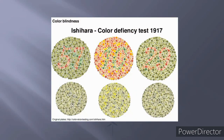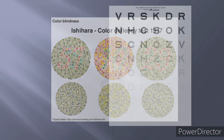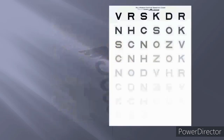There is also the Pelli-Robson chart, by which we check the contrast sensitivity of a patient with optic nerve disease. If a patient is unable to read the chart, the contrast sensitivity in optic nerve disease is impaired. This chart is used to check the function of the optic nerve.